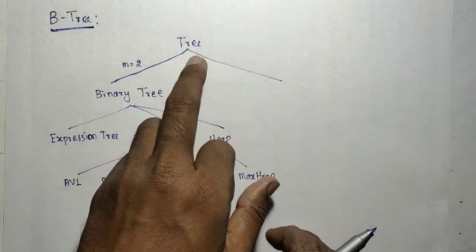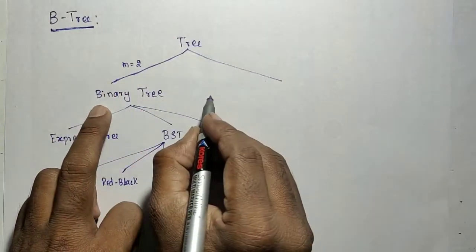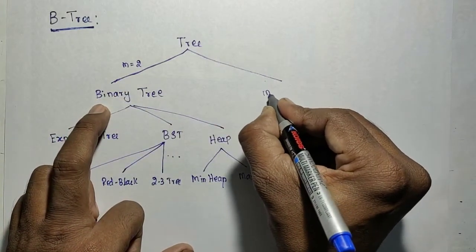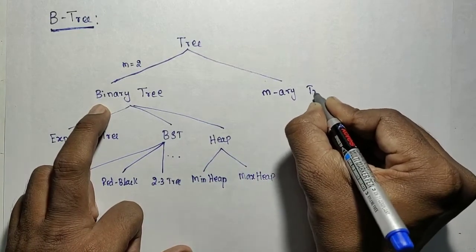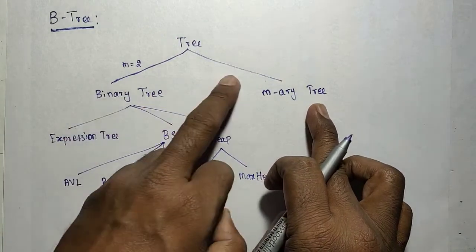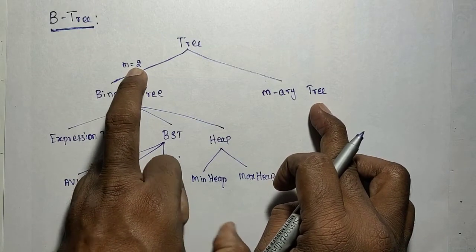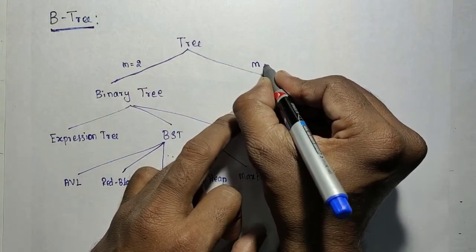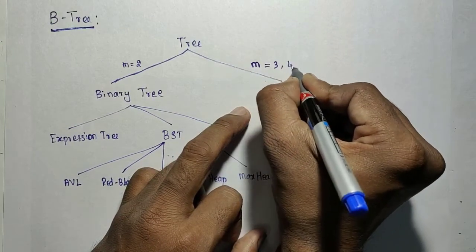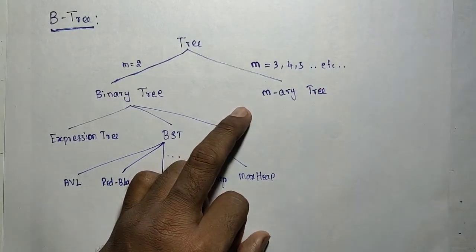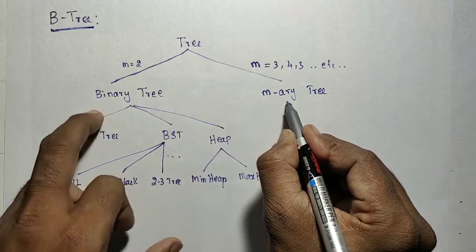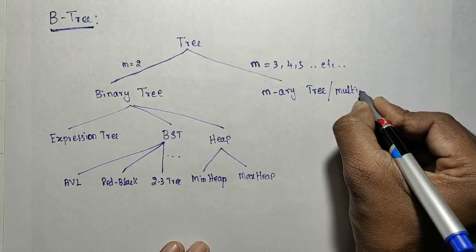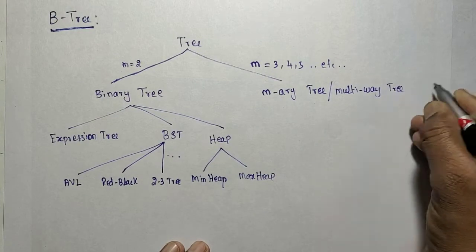The classification based on number of children: when m equals 2 it is a binary tree. The general version of the binary tree is called an m-ary tree or m-way tree. Here, m is the maximum number of children, also called the order of the tree. m may be 3, 4, 5, and so on.